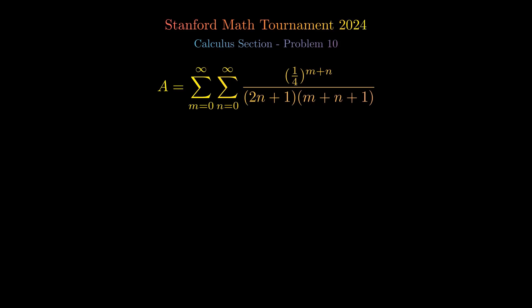First, let's look at the given expression. A equals the double summation of 1 fourth raised to the power of m plus n divided by 2n plus 1 times m plus n plus 1. At first glance, this looks daunting, but with some clever transformations, we'll unveil its true nature.